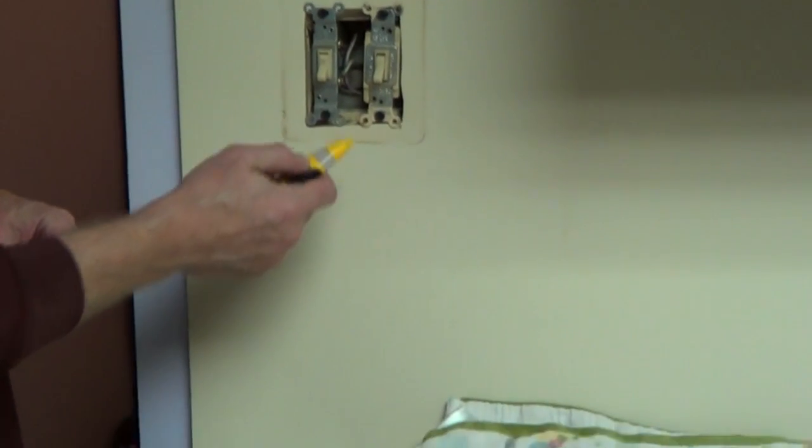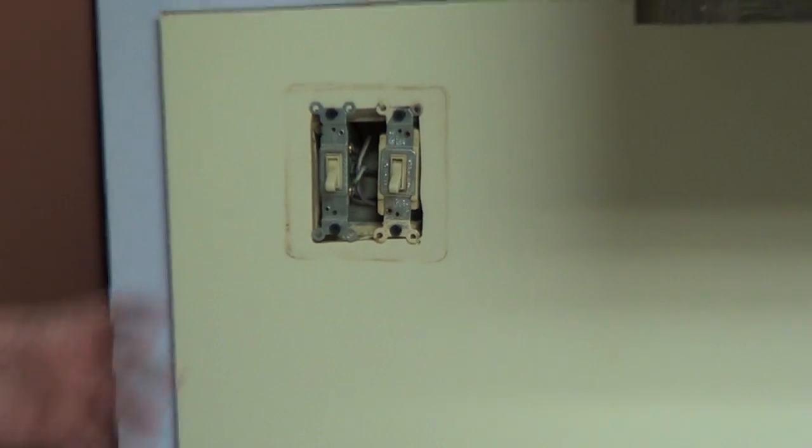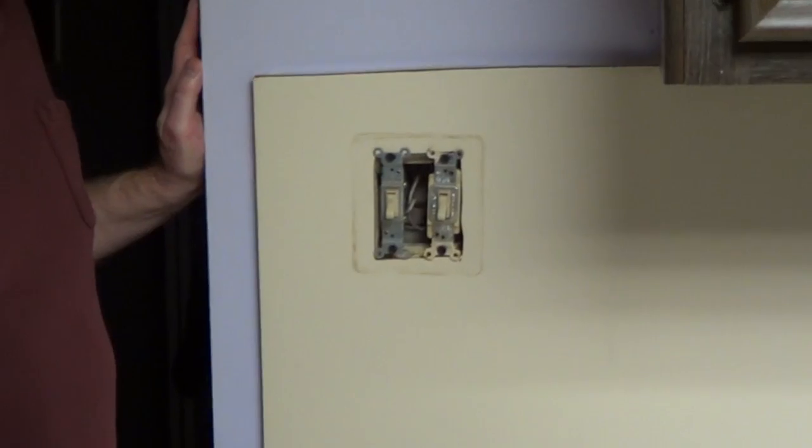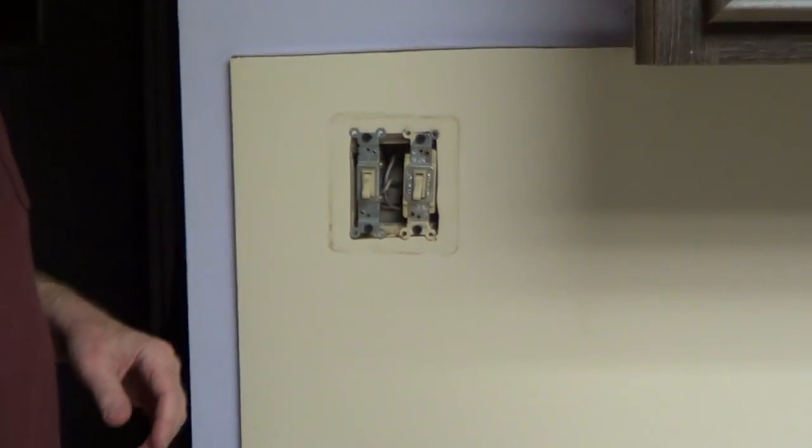I'm going to use a non-contact voltage tester. We can see we have electric here. Now we'll go shut off the electric to the circuit. I shut off the electric to the circuit and I'm just double-checking. Now we know there's no electricity here.